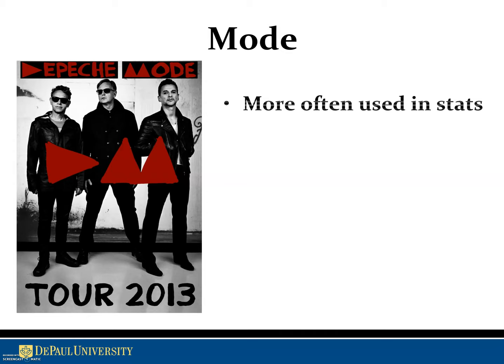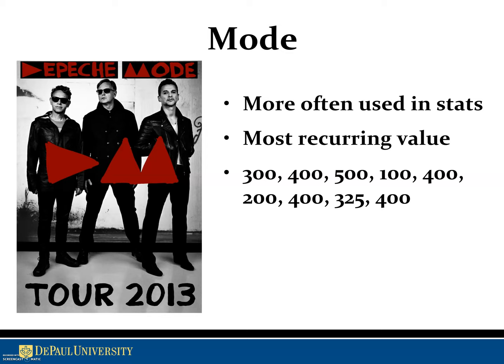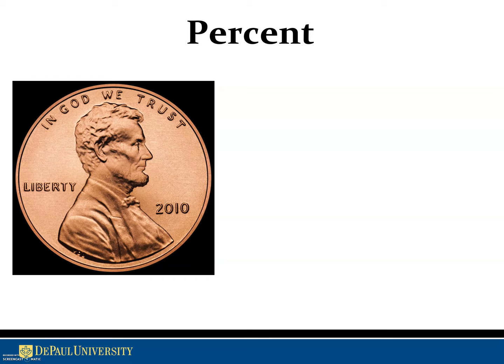Finally in central tendency, mode is the most recurring value. In a survey, for example, you might want the average age of respondents using the mean, but you might also want to know the most common response on a rating scale — that's where you'd use mode. In a data set, you simply look for what occurs most frequently; visually you can see 400 stands out, so that would be the mode of that data set.